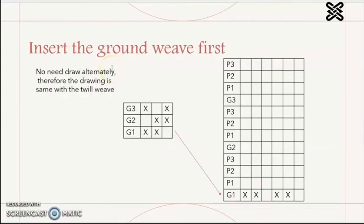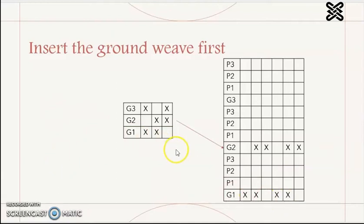Then we can insert the ground weave first. For the ground weave, we do not need to draw alternately. Therefore, the drawing is same with the normal twill weave. For the ground one, you see, they are the same. The warp end is 6, so we need to double the ground. For the ground two, we add the twill weave in this line. And the ground three. After we insert the ground weave, then we can insert the pile weave.